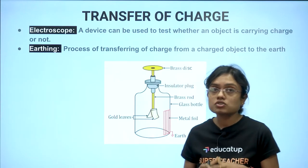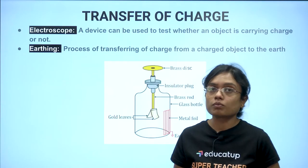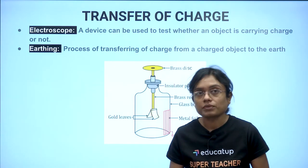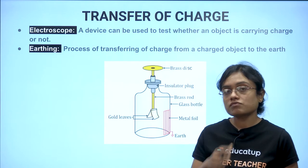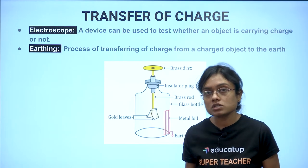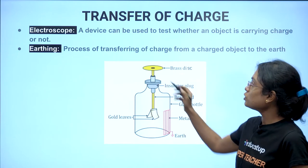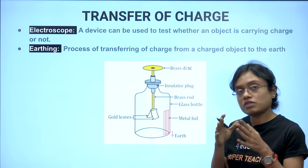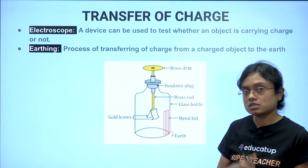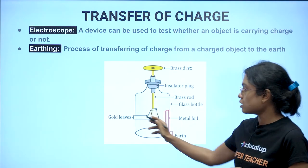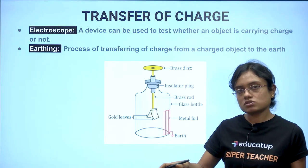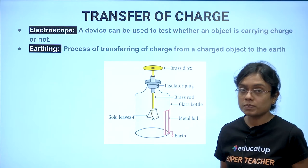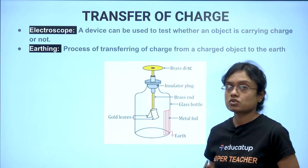Transfer of charge — how charges are transferred. An electroscope is a device which can be used to test whether an object is carrying charge or not. Earthing is the process of transferring charge from a charged object to the earth. If the object placed on the brass disc of the electroscope carries any charge — positive or negative — the gold leaves will diverge. If there is no charge, they will remain straight.